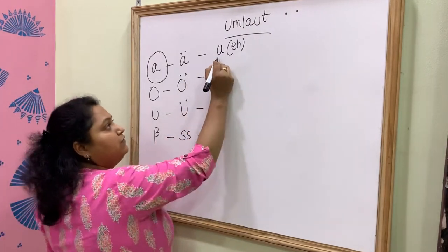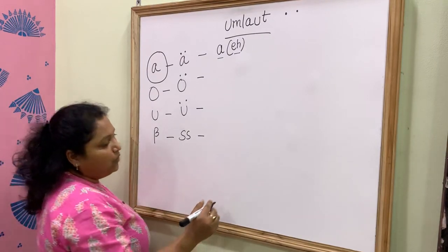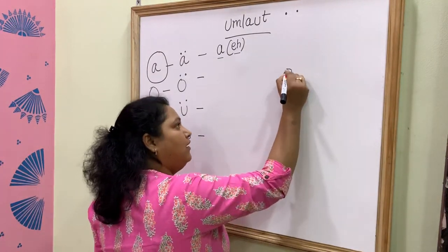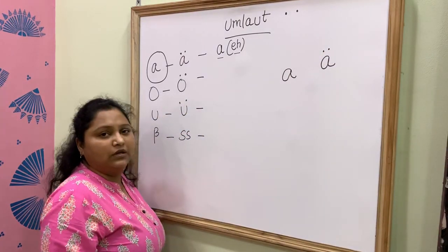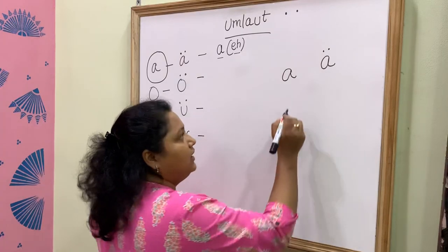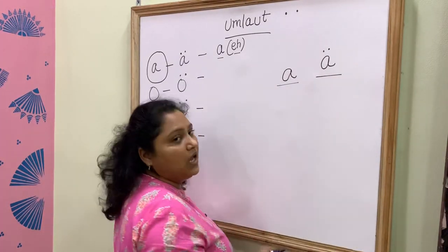The pronunciation will become normal A. If you see this and if you see this, both of their pronunciations will be different. This will be A and this will be Ä.